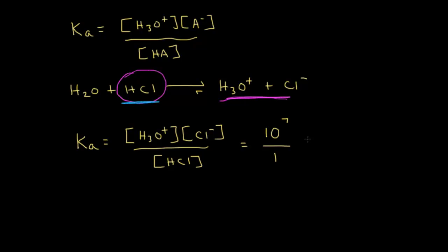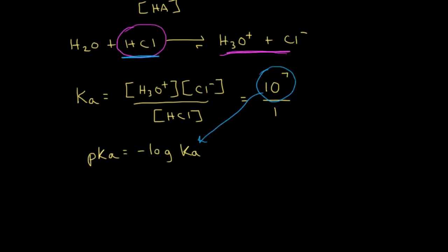Especially organic chemists will tend to favor pKa values over Ka values. The way to calculate a pKa value is just like finding the pH of something. From general chemistry, pH equals the negative log of the concentration of the hydronium ion — a way of giving you numbers that are easier to work with. It's the exact same concept here: pKa equals the negative log of Ka. So for HCl, we plug in 10 to the 7th, and the pKa equals negative log of 10 to the 7th, which equals negative 7.